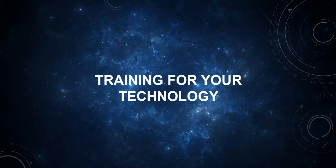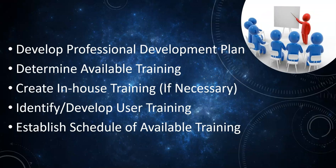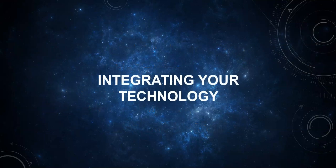The seventh step in the process is training for the new technology. The library administrator should develop a professional development training plan for both staff and administration. Within this plan, the administrator should determine if the professional development and training will be offered in-house or through vendor training. The administrator should work with the vendor to determine what training is available for the service. Also, the administrator must consider user training, asking the vendor if there are instructional videos available for users or if the library staff need to create their own instructional videos and promotions. Lastly, the plan should include how often training would occur for staff, administration, and external users.